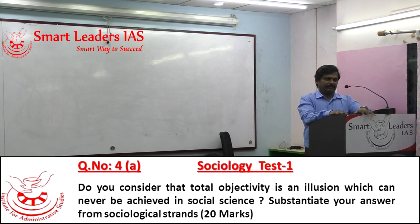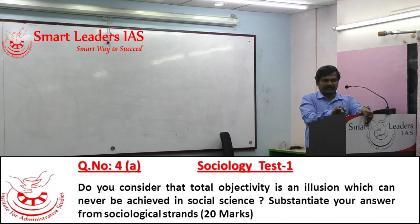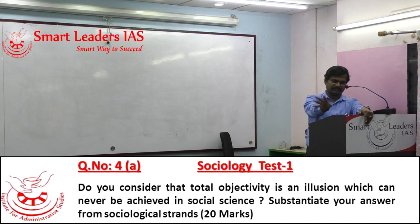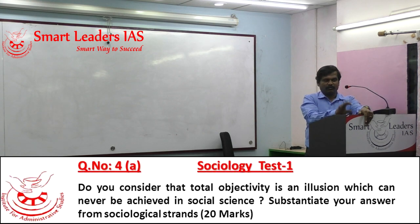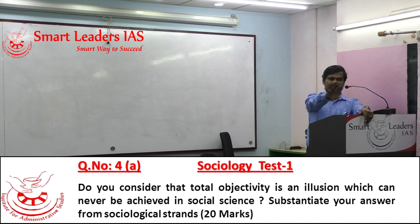Gunnar Myrdal makes the statement that total objectivity is an illusion in social science research. The possibility of objectivity in social science research is a matter of debate central to sociological discourses. Those who position their sociological stand as objectivity being absolutely possible are called positivists, and non-positivists reject the possibility of objectivity in sociology.